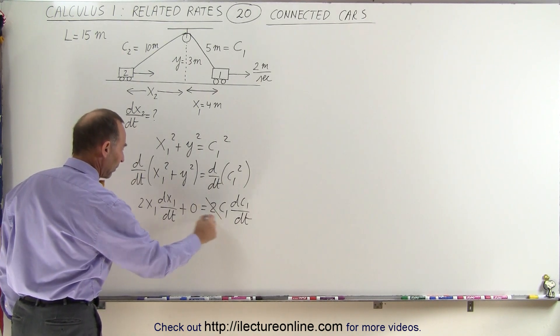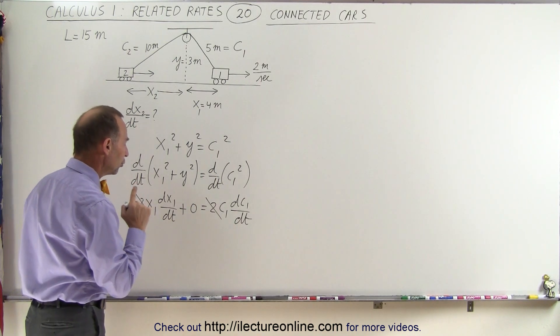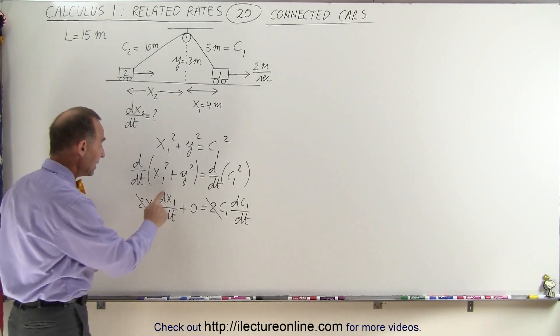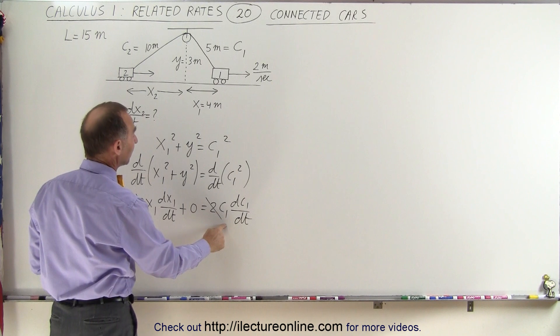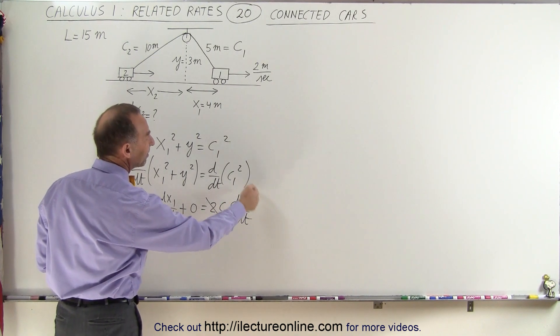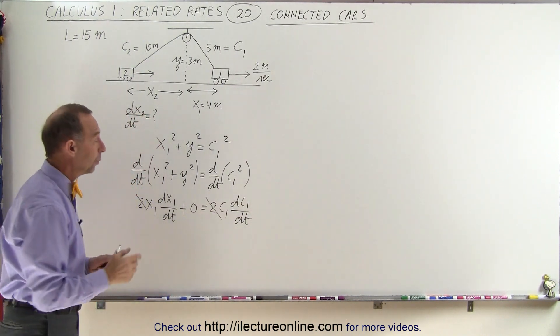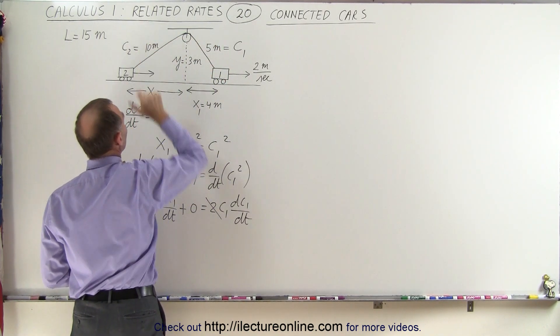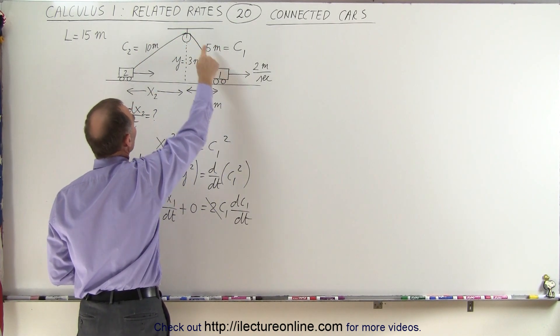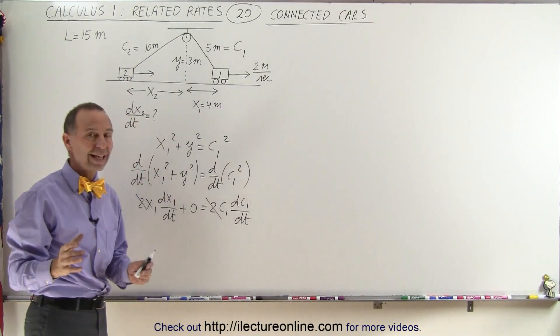Now we can divide both sides by 2 and since we know dx1 dt that's given and we know x1 and c1 we can figure out what dc1 is equal to. And then we can relate the rate of change of c1 to the rate of change of c2 because as c1 gets longer c2 gets smaller by the same quantity.